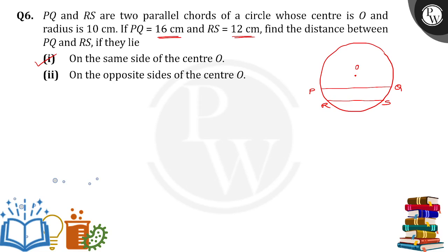If I join OP, so OP is equal to the radius of the circle, which is 10. And OR is also equal to 10. From the center, if I draw a perpendicular line, it will be perpendicular to both PQ as well as RS, since PQ is parallel to RS. Where this perpendicular line meets PQ is point A, and where it meets RS is point B.